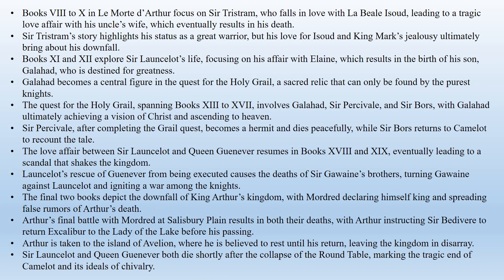Books 8, 9, and 10 tell the story of Sir Tristram, another legendary knight. Tristram falls in love with La Belle Isoud while seeking a cure for a wound. However, Isoud marries King Mark, Tristram's uncle, leading to a secret and dangerous love affair. Despite being a great warrior, Tristram's love for Isoud and the jealousy of King Mark lead to tragedy. Tristram is eventually killed by Mark after many adventures.